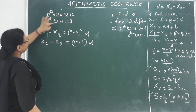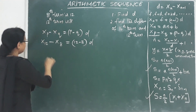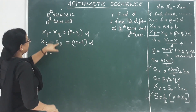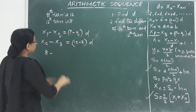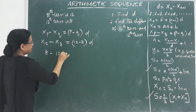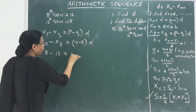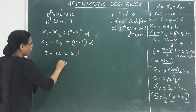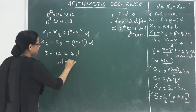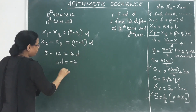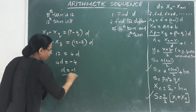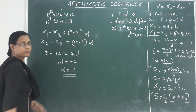x12 equals 8 and x8 equals 12. So 8 minus 12 equals 4d, which gives minus 4 equals 4d, and therefore d equals minus 1.